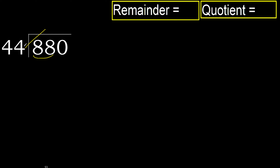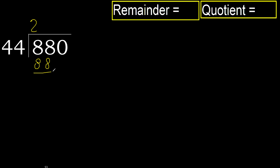44 multiplied by 3 is greater, so multiply by 2. 88 is not greater. Subtract: 88 minus 88 equals 0. Next.